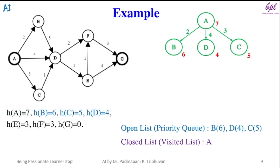A has three successors: node B, node D and node C. These nodes will be added to open list along with their heuristics. So now open list has three nodes: node B, node D and node C.